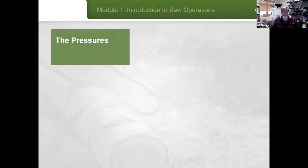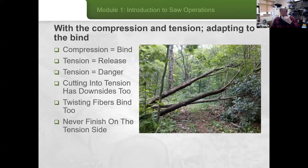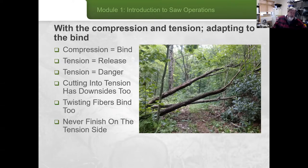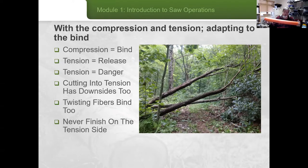So how do we adapt to the bind? On the compression side — what we call the bind — that will grab your saw but not necessarily hurt you. The tension side, the release side, is where you have to pay attention, know where you need to be. Tension equals danger. If you have a side bind — a log jammed between two trees — you need to make sure you're not finishing that cut on the side where the tension energy wants to release. Cutting into the tension has its downsides; I gave you one example with barber chair.